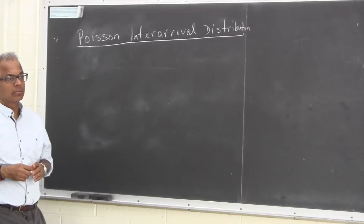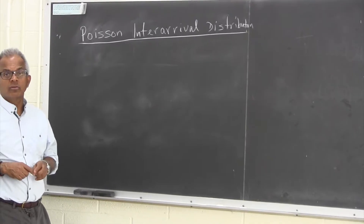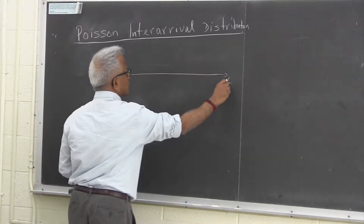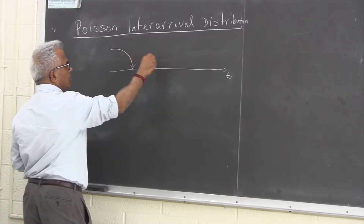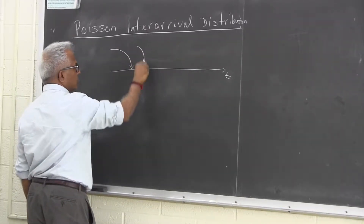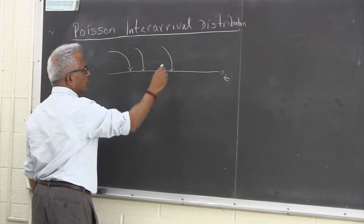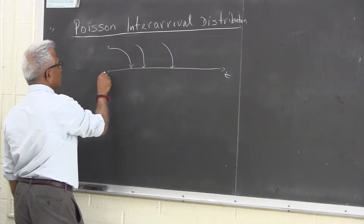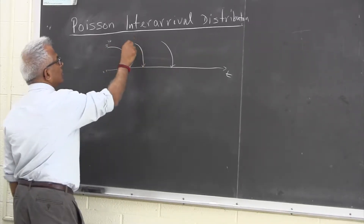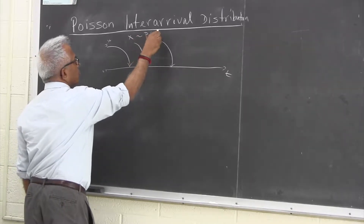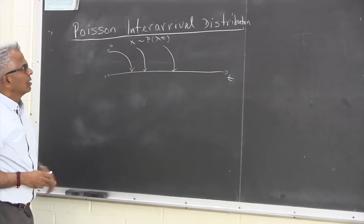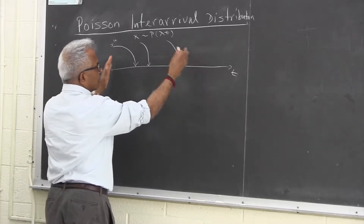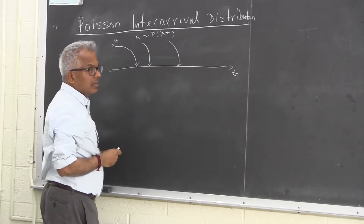Let's look at the distribution of the inter-arrival time between Poisson arrivals. We have a Poisson process where arrivals happen according to a Poisson distribution — they are random arrivals, so you don't know when they are going to happen. I am going to call this process Poisson with rate lambda, or parameter lambda t. That means if you take an interval 0 to t, the number of arrivals in that interval is Poisson.